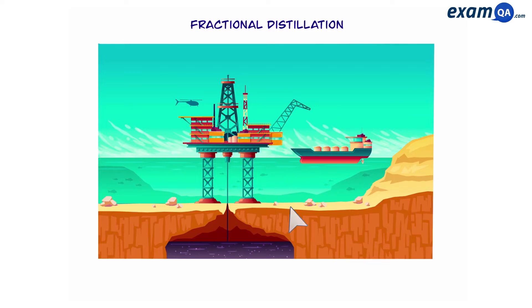Here's a picture of the crust of the earth. This picture shows crude oil which is a mixture of hydrocarbons being extracted from the crust of the earth. This is an oil rig, a big machine in the middle of the ocean that helps to extract crude oil.